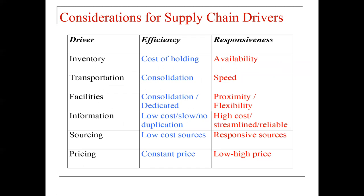Considerations for supply chain drivers: we have three columns — driver, efficiency, and responsiveness. For inventory, efficiency means cost of holding, and responsiveness means availability. For transportation, efficiency means consolidation of orders, and responsiveness means speed. For facilities, efficiency means consolidation and dedicated use, responsiveness means proximity to customers and flexibility. For information, efficiency means low cost and no duplication, responsiveness means high quality, streamlined, and reliable. For sourcing, efficiency means low-cost sources, responsiveness means responsive sources. For pricing, efficiency relates to cost and price, while responsiveness involves low-to-high pricing strategies.